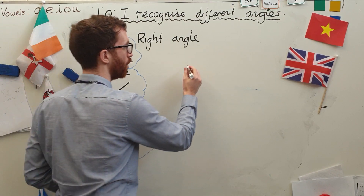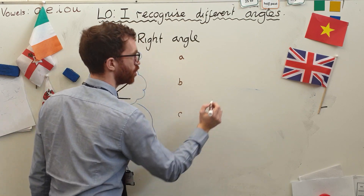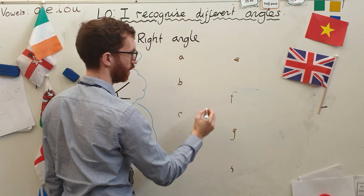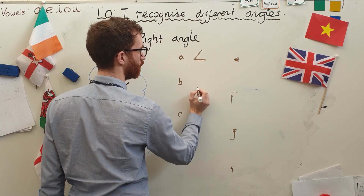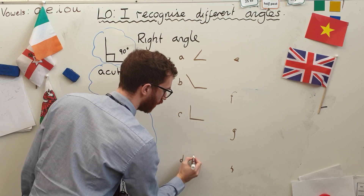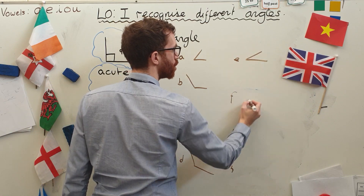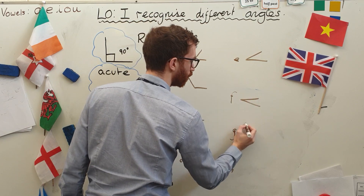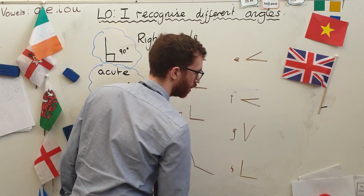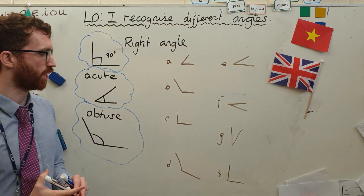Just before we finish this video, I am going to create for you a little test, just so that we can see that you are recognising these angles successfully. You don't need to know exactly what the angle is, but you should kind of be able to tell just from looking at it what sort of angle we are dealing with. Little test for you there: A, B, C, D, E, F, G, H — off you go, pause.